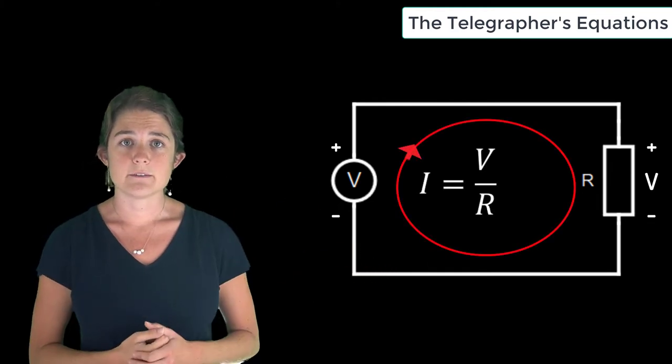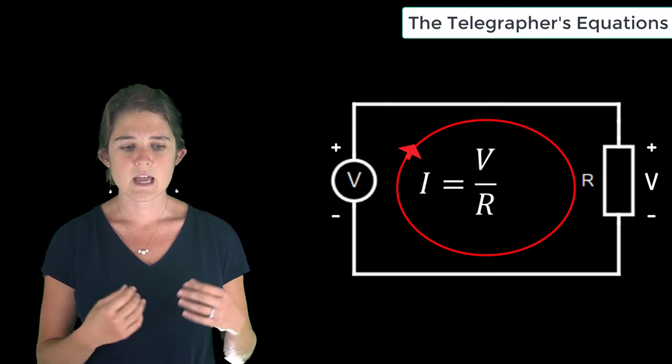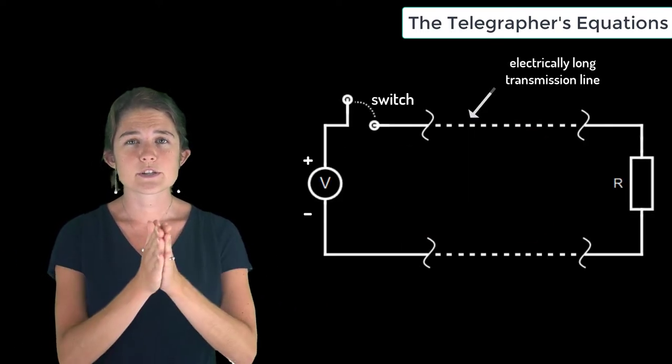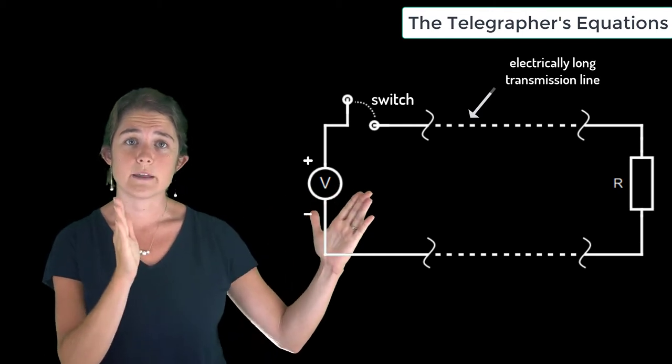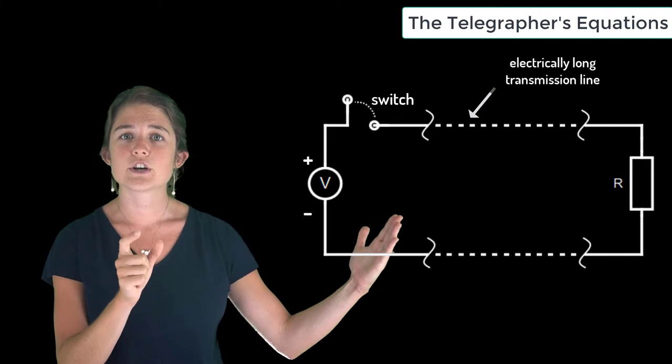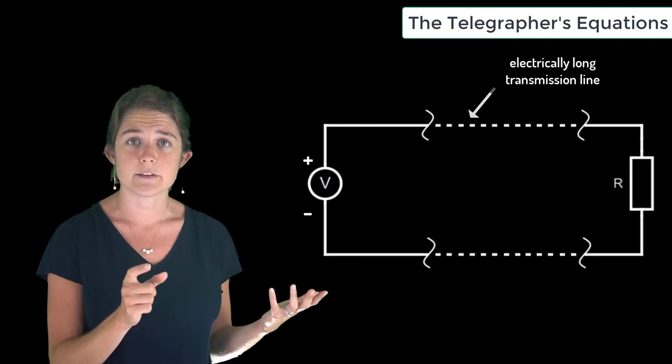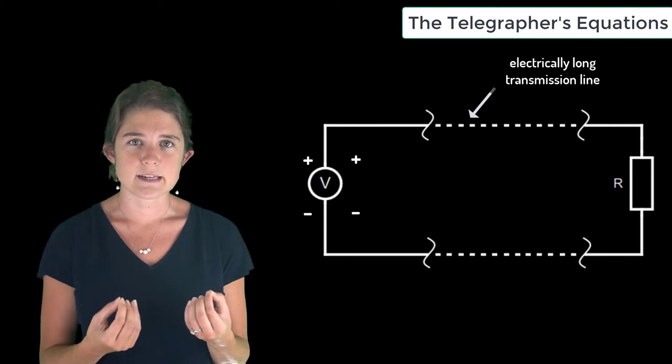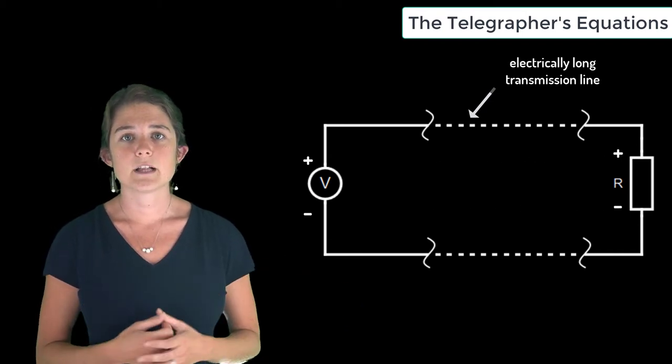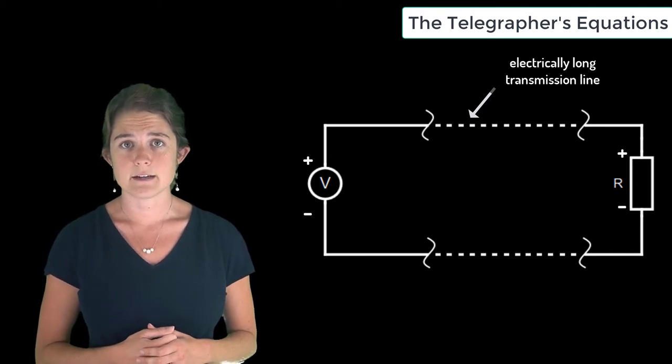However, suppose this circuit was very large - suppose there was a great length of wire separating the voltage source from the load. In this case, the voltage could not instantaneously appear at the load; it would necessarily take some time to propagate down the line. We will need to develop a model that can handle this added complexity.